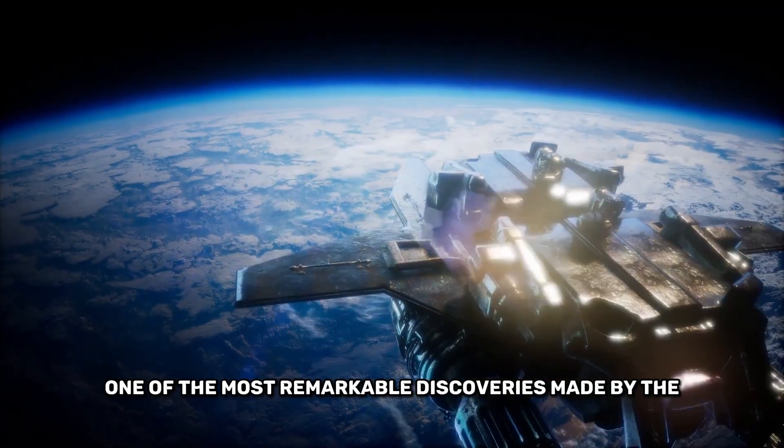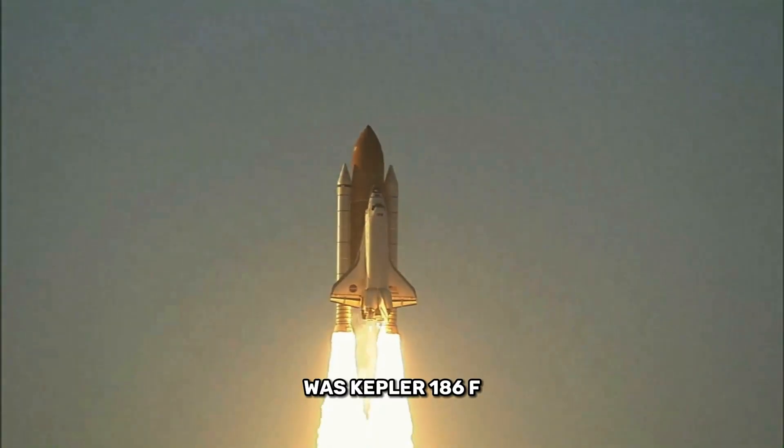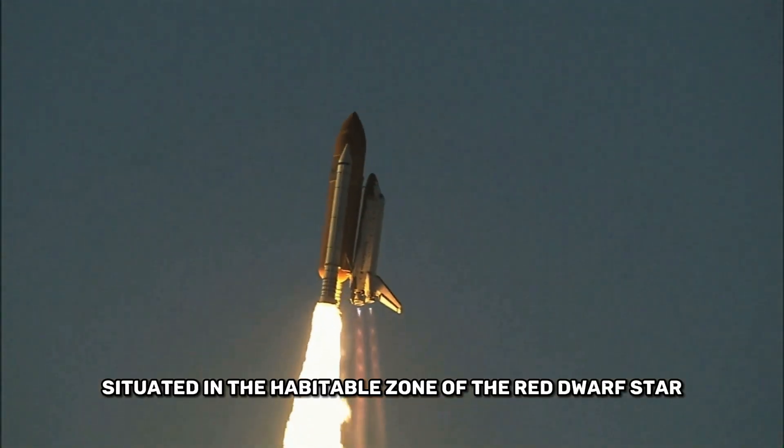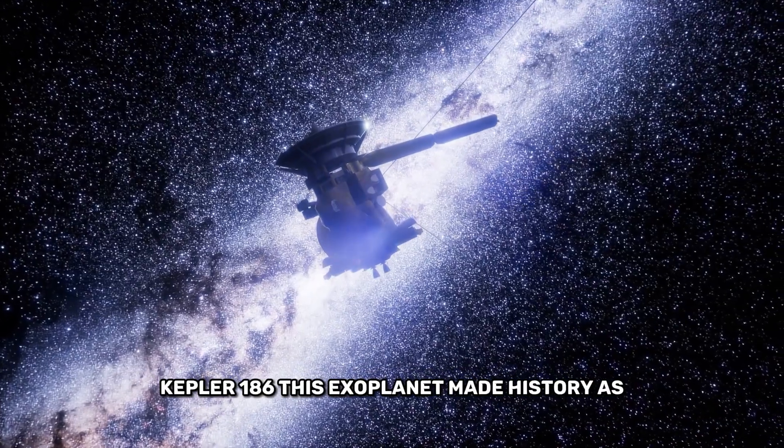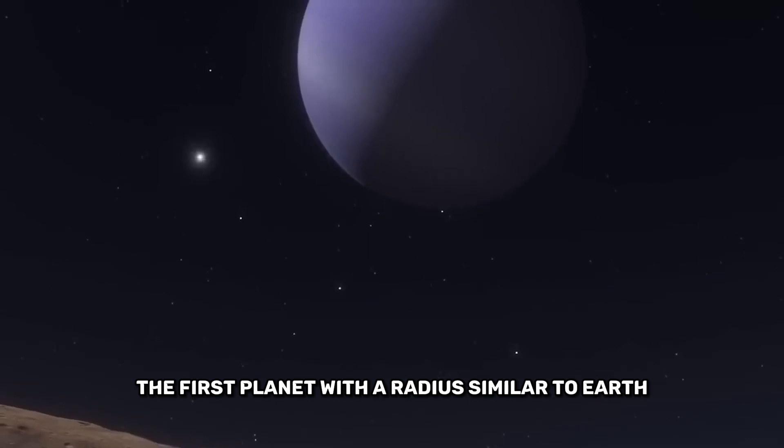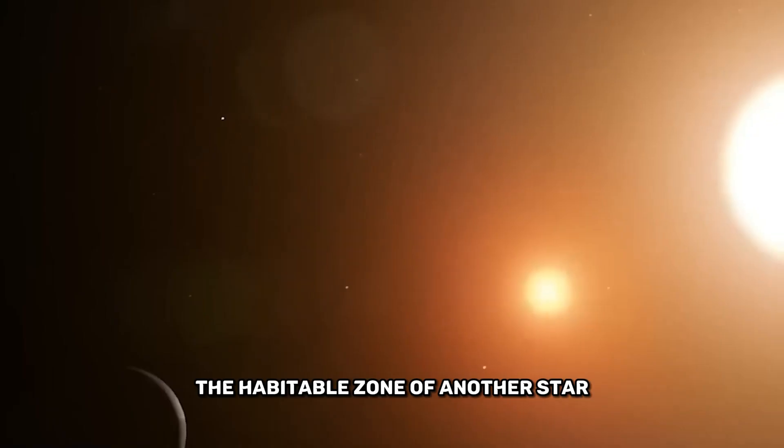One of the most remarkable discoveries made by the Kepler spacecraft in April 2014 was Kepler-186f. Situated in the habitable zone of the red dwarf star Kepler-186, this exoplanet made history as the first planet with a radius similar to Earth to be discovered within the habitable zone of another star.